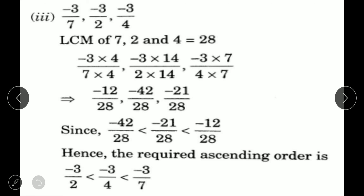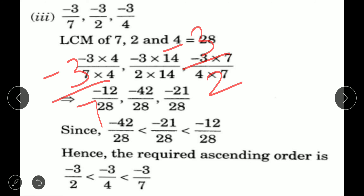Now come to the third part. The numbers are: minus 3 upon 7, minus 3 upon 2, and minus 3 upon 4. To make the denominators equal, take the LCM of 7, 2, and 4. The LCM comes out to be 28 — since 28 appears in the tables of 7, 2, and 4.